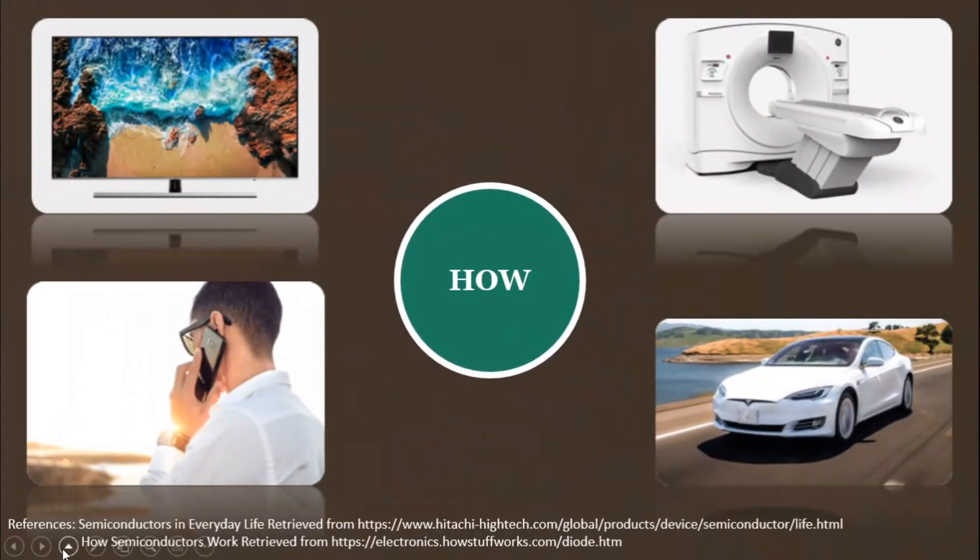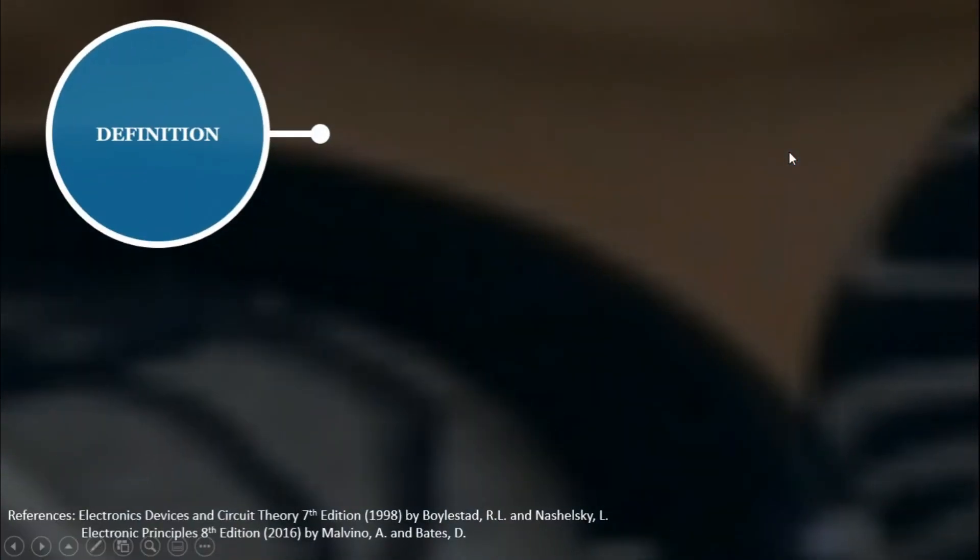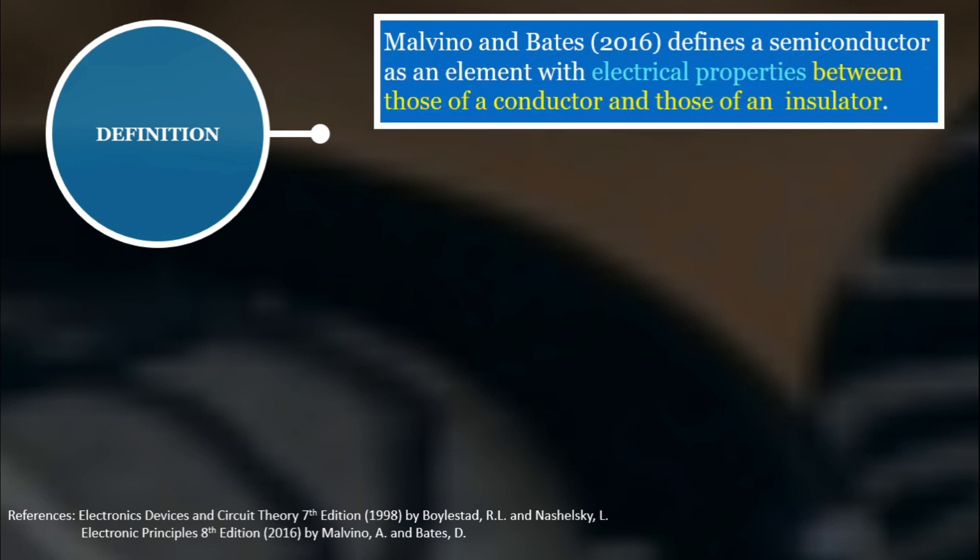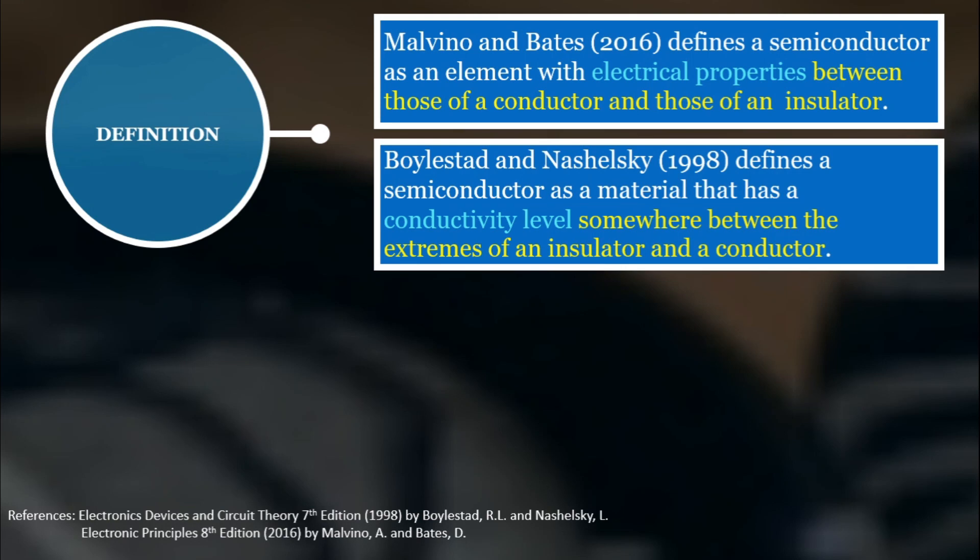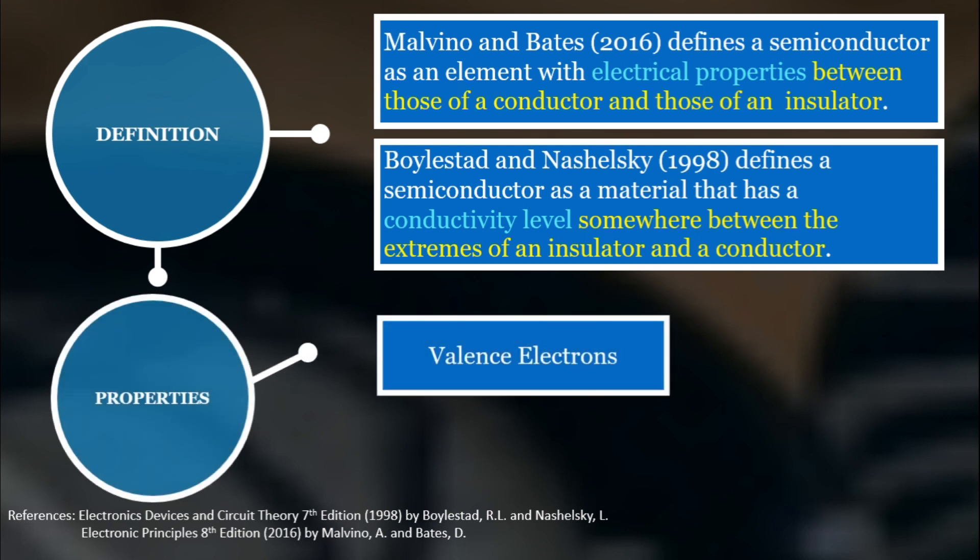Now that we have established how semiconductors are utilized in electronic devices, let's now move on to what semiconductors are. According to Malvino and Bates, a semiconductor has an electrical property that is between a conductor and an insulator. On another note, Boylestad and Nashelsky defined a semiconductor as a material with a conductivity level between a conductor and an insulator.